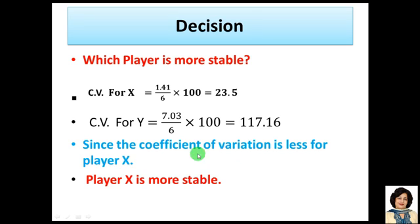Since the coefficient of variation is less for player X, we can say player X is more stable.